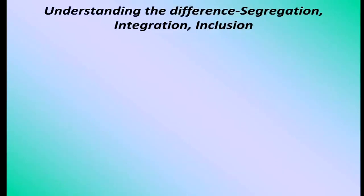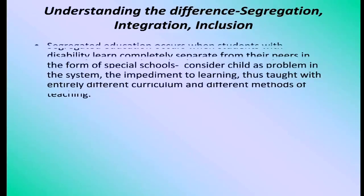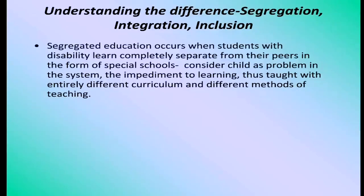We need to understand the difference between three basic terms: segregation, integration, and inclusion. Segregated education occurs when students with disability learn completely separate from their peers in the form of special schools, such as schools for the visually impaired or hearing impaired. These schools consider the child as a problem in the system, and they are taught with an entirely different curriculum and different methods of teaching.